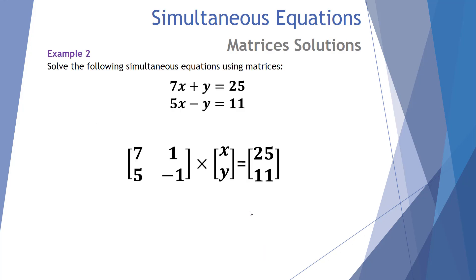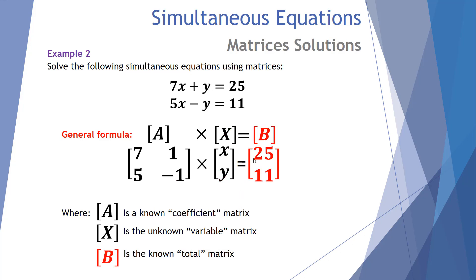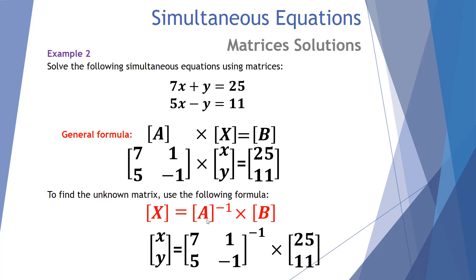Let's look at our second example. Here's our starting matrix that we've set up. Again, using the general formula — the coefficient matrix multiplied by the unknown variable matrix equals the total matrix B. Using that formula as a shortcut, to find the unknown matrix X we take the inverse of A — the same numbers 7, 1, 5, negative 1 — all to the power of negative 1, and multiply by our total matrix B. When we do that we get an answer of 3 and 4, a lot quicker using the shortcut. But it's important to understand why we use that particular formula.